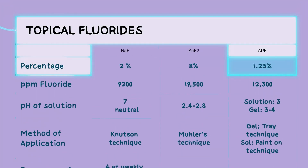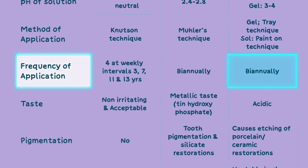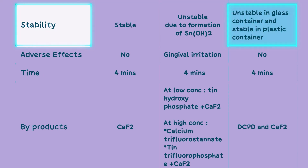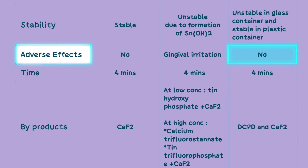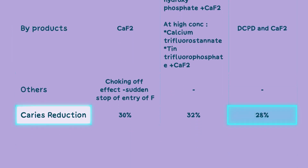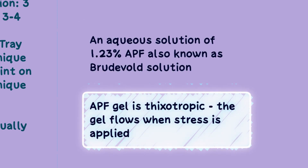1.23% acidulated phosphate fluoride, or APF gel, has 12,300 parts per million fluoride and is applied using the tray technique biannually. Disadvantages include an acidic taste and etching of porcelain or ceramic restorations. It is unstable in a glass container but stable in a plastic container. APF has no major adverse effects and should be applied for 4 minutes. By-products include dicalcium phosphate dihydrate and calcium fluoride, and there may be a choking-off effect if fluoride entry is suddenly stopped. It reduces caries up to 28%. An aqueous solution of 1.23% APF is also known as Brutval solution. APF gel is thixotropic and flows when stress is applied.